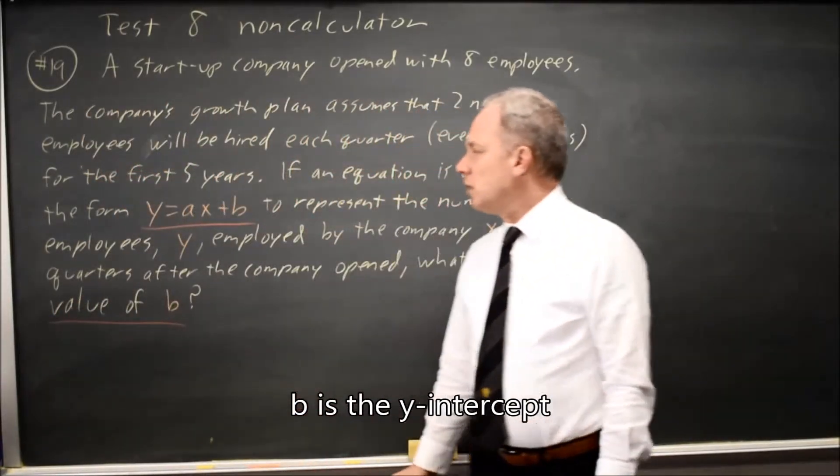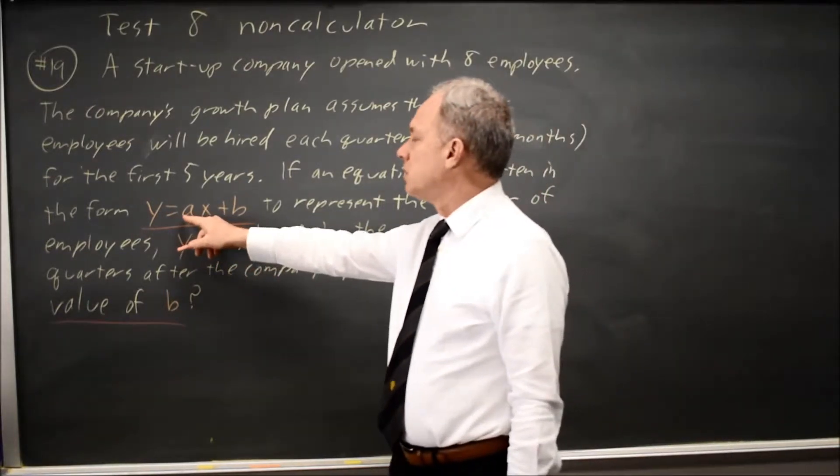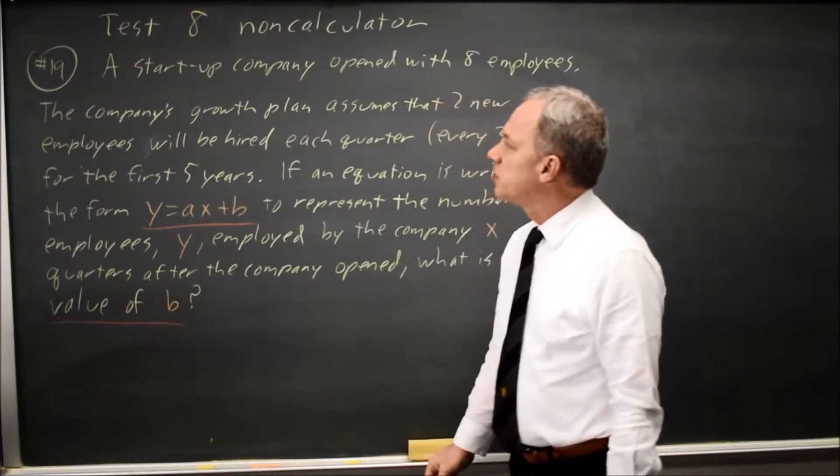B is the intercept when X equals 0, Y equals B. Y equals A times 0 plus B at X equals 0, so B would be the starting value.